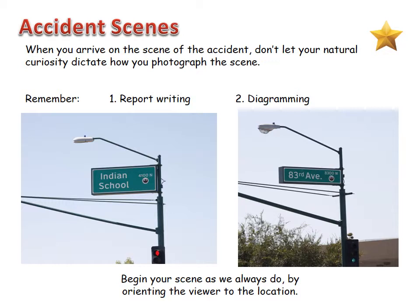We want to begin our scene the way we always do by orienting the viewer to the location. In this accident scene I'm going to show you, it happened at the intersection of Indian School and 83rd Avenue, so I'm taking photographs of both street signs. Both street signs are made important key features — they're both dead-on to the camera — because it happened at an intersection.